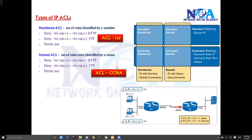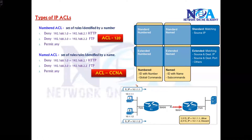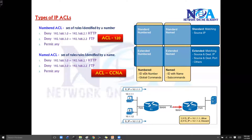So identification of ACLs can be done either based on a number or a name — if you're using a name it is a named ACL, if you are using a number it is a numbered ACL. But the main classification is standard or extended, and both numbered and named ACLs are actually classified into standard or extended ACLs.